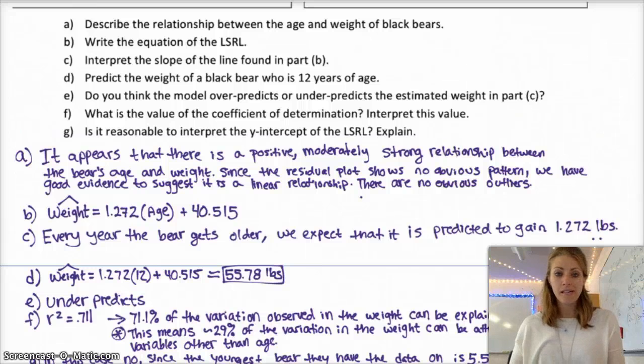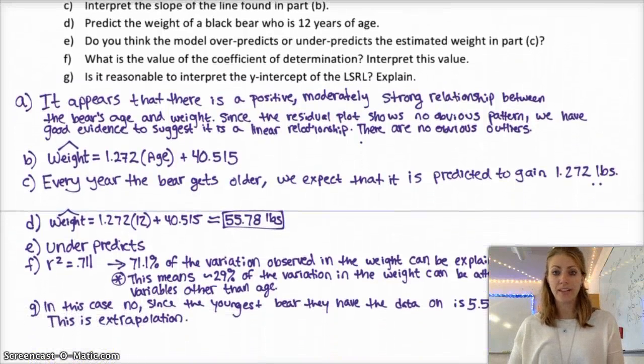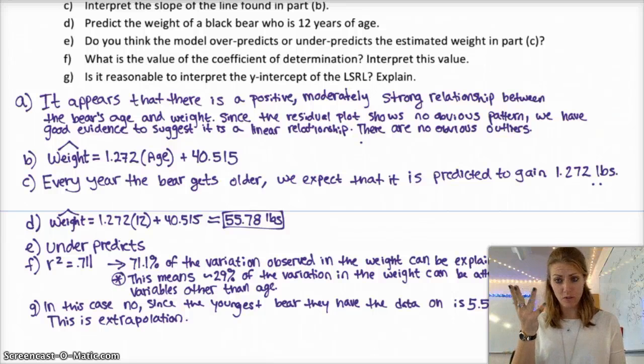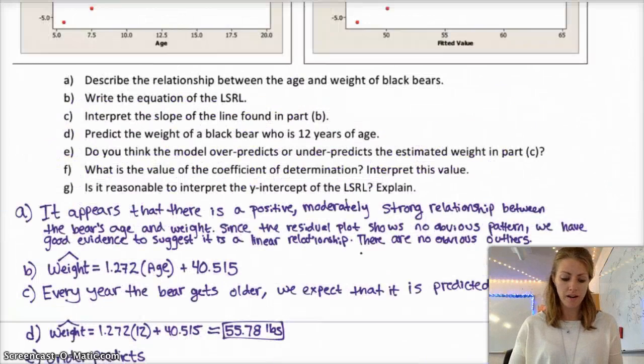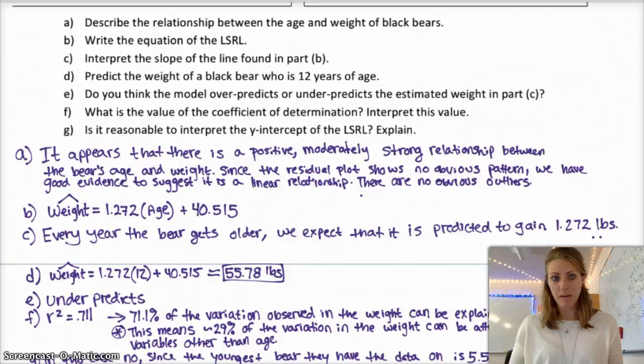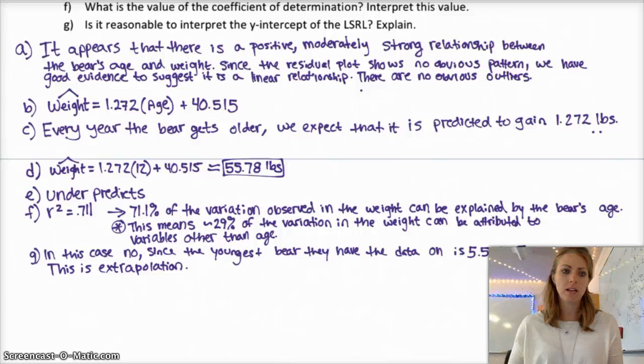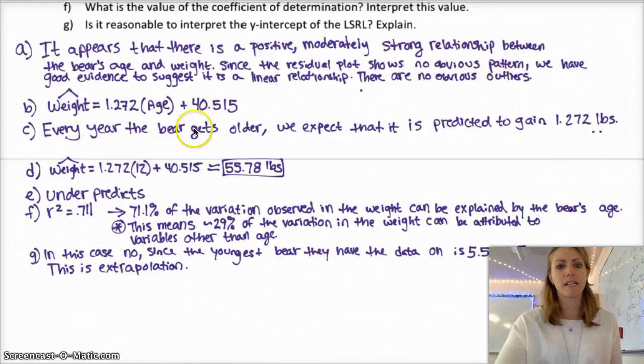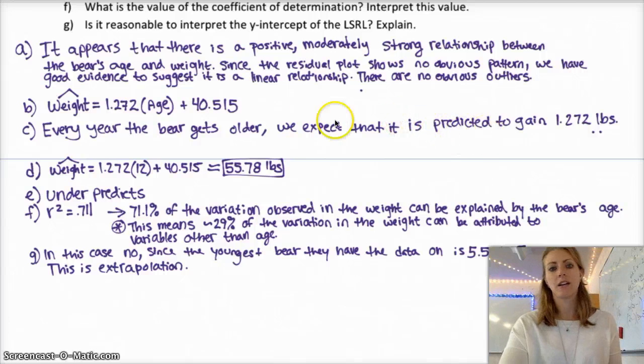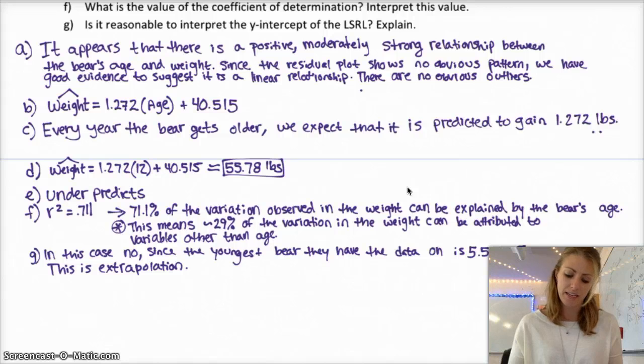Okay, here are your answers. For A, don't forget DOS, direction, outliers, form, strength. So if you're interpreting, or describing the relationship between the age and weight of black bears, you should be including all of those things. B is just the least squares regression line. C, interpret the slope. It says every year the bear gets older, we expect that it gains 1.272 pounds.